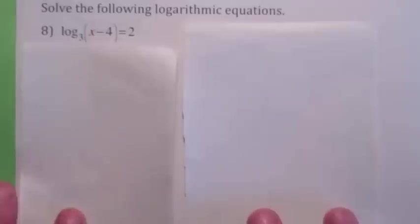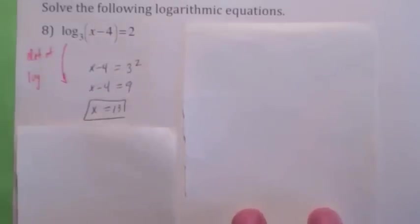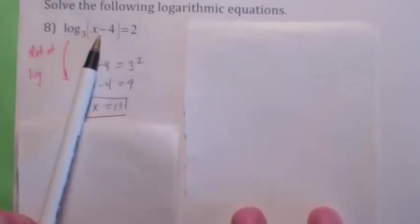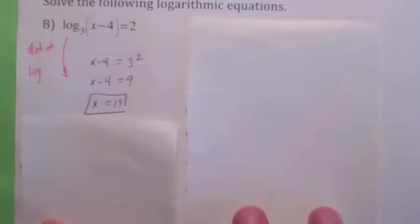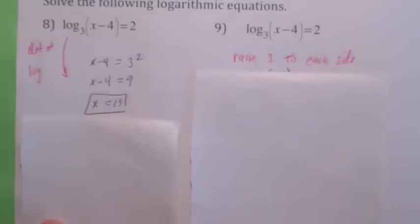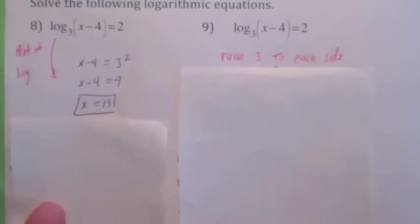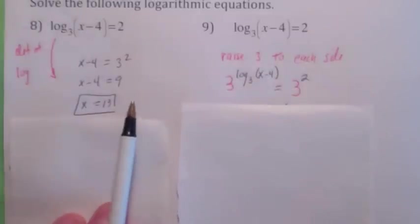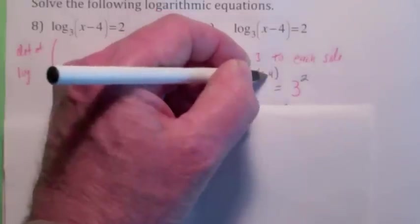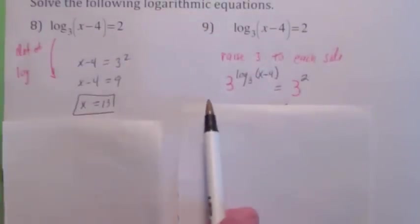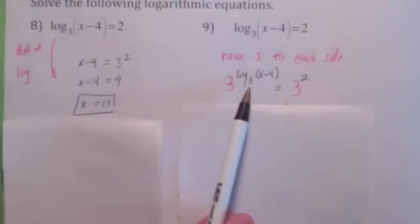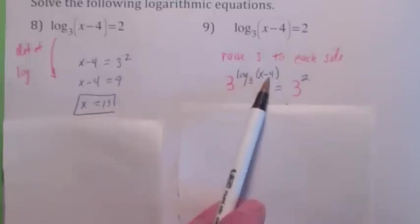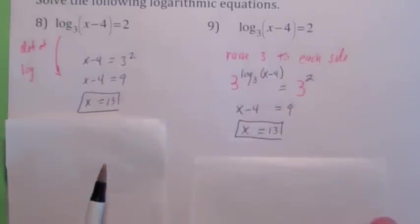Now let's talk about solving logarithmic equations. The old way is to use the definition of logarithm — you write the log equation as an exponential equation, add 4, and get 13. Here's another way: instead of using the definition, we're going to raise the base to each side. The base of the logarithm is 3, so raise 3 to each side. The 3 cancels with the log base 3 on the left — because b to the log base b of x is just x — so the left side becomes x minus 4, and you still get x equals 13.